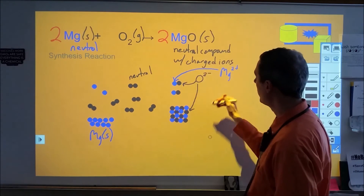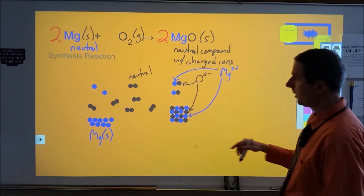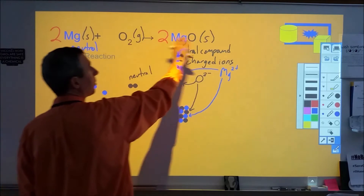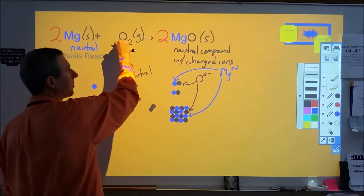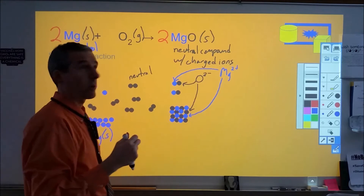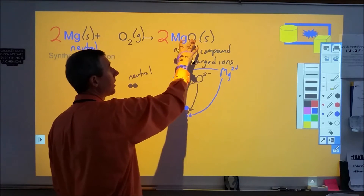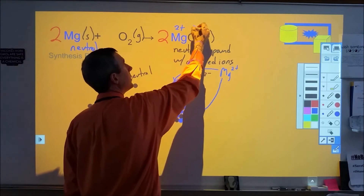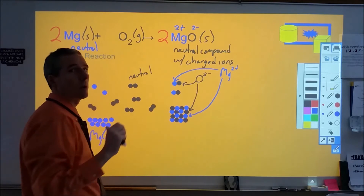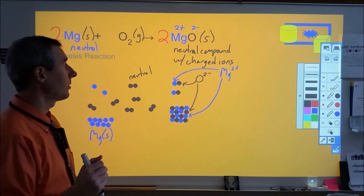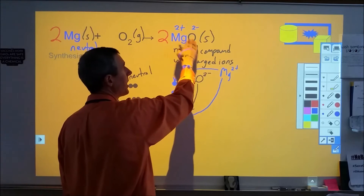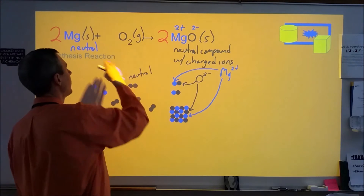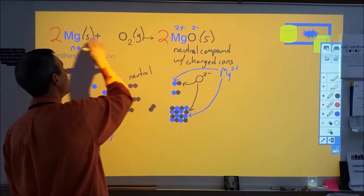Because we have Mg²⁺ and O²⁻, we need a one-to-one ratio. Many people don't understand this and try to apply the molecular subscripts from the elemental form to the ionic compound — that doesn't work. In an ionic compound, the formula and subscripts are based on the charges. A two-plus and two-minus charge gives a one-to-one ratio of those ions.